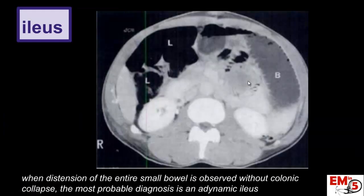An ileus just means that there's distension of the entire small bowel, but you don't actually see that distal collapse.